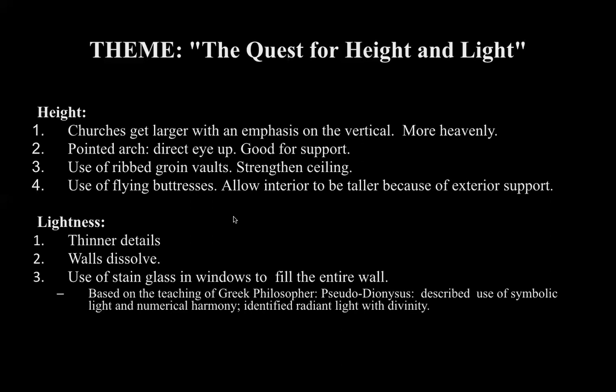During the Gothic era, Saint-Denis was the first Gothic church. The patron of that church studied who he thought was a Christian scholar, but it was actually the Pseudo-Dionysius, a Greek philosopher. This philosopher emphasized how light and numbers can be symbolic — light becomes the light of God. That becomes a real emphasis in Gothic architecture, along with divine harmony: lots of threes, fours, and twelves as mathematical harmony to represent divineness.